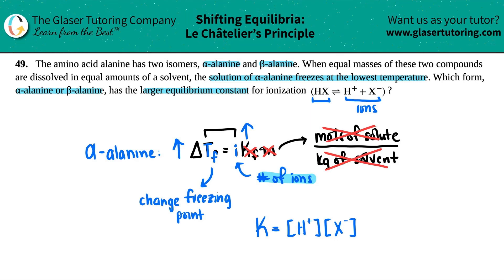If you have way more ions, and these are the ions increasing, what's going to happen to the K value? That's a direct effect—that's going to increase as well. So which one had the larger equilibrium constant? Alpha alanine.